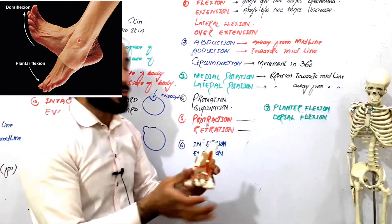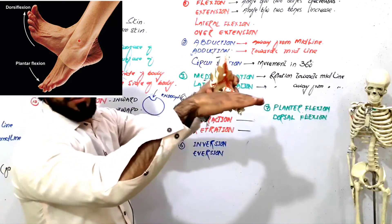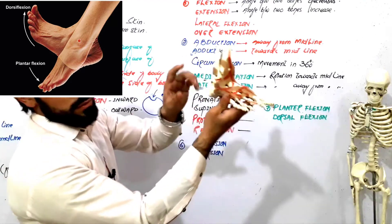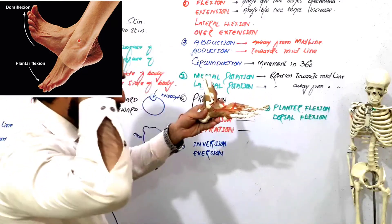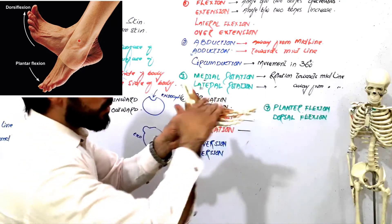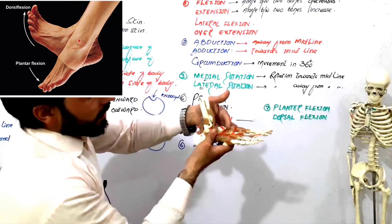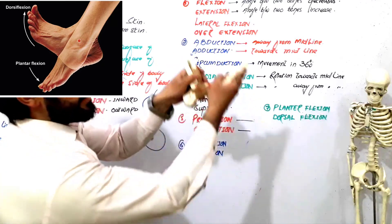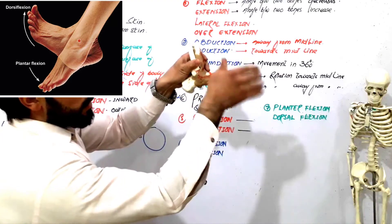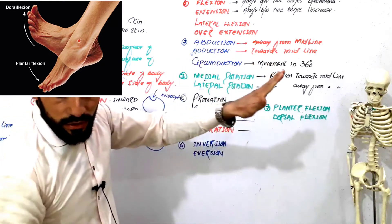This is the plantar surface and this is the dorsal surface. Here is the tibia and fibula. When the angle between the tibia/fibula and the dorsal surface decreases, this is called dorsal flexion. When the angle between the tibia and fibula increases, this is called plantar flexion.